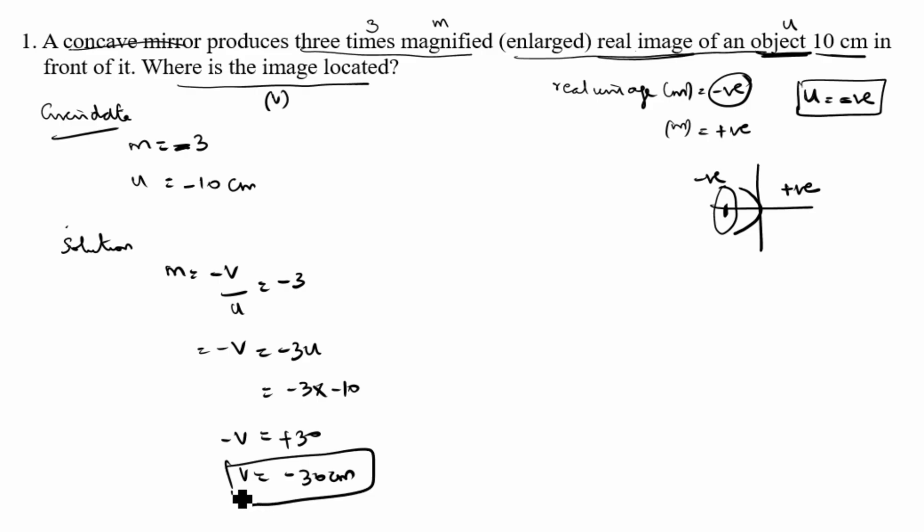So v also comes on this side. u is 10, v is 30. I already told you this side is negative, so v equals minus 30. What is the answer?